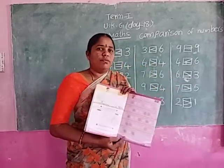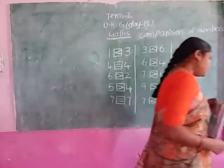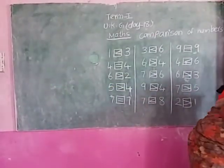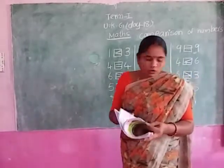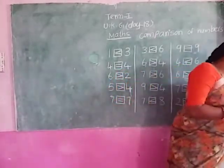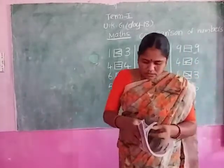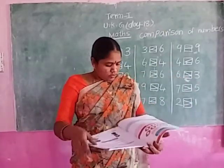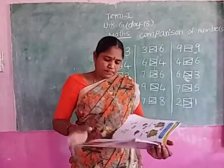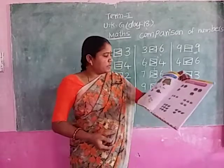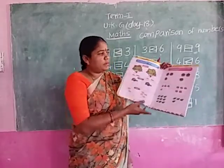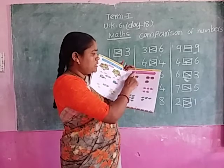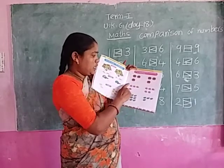This is your homework. Next, workbook page number 27. Comparison of numbers — count and compare. Put the correct symbol in the circle.